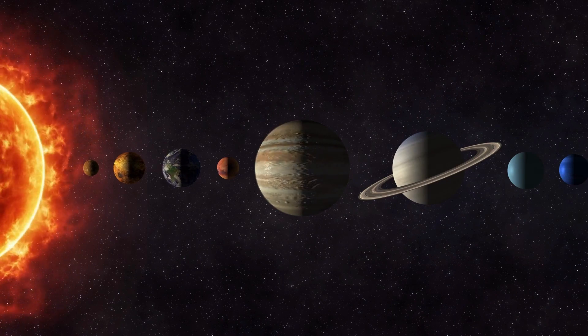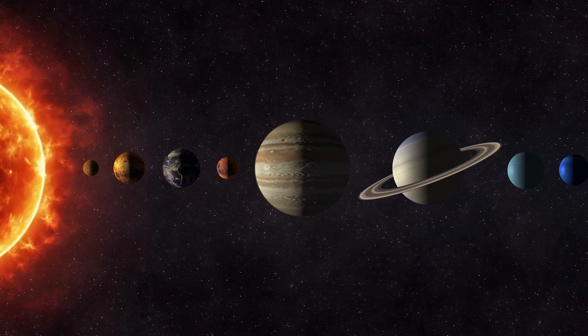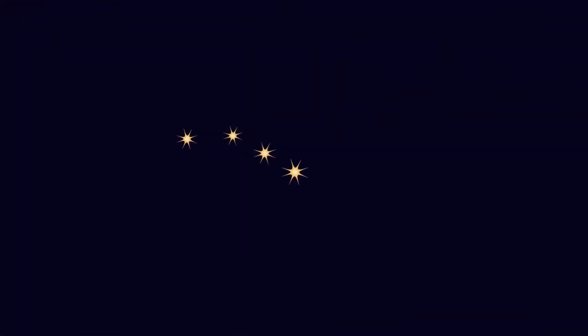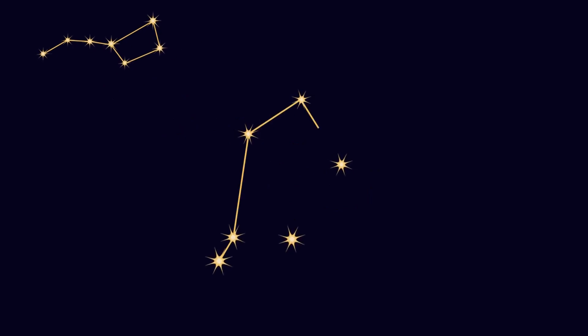Constellations themselves only have the appearances they do because of where our solar system happens to be located and the time in which we find ourselves. If you were to go to another solar system and look at the same stars we can see from Earth, you would not see any of the constellations we are used to.